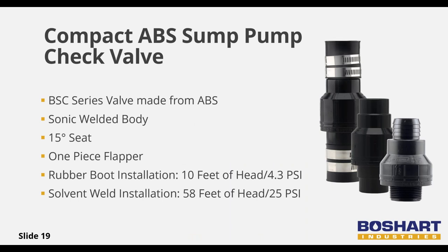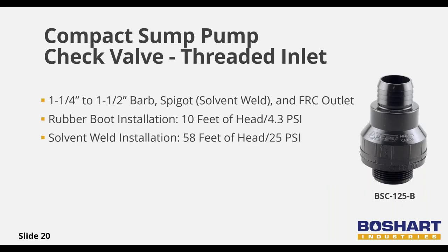All compact ABS sump check valves use a gravity-style design. They are constructed from two body pieces that are ultrasonically welded together, and the flappers are made of one piece to ensure a positive seal on the seat. These should all be installed in a vertical position so flapper operation is not compromised. Compact valves with threaded inlets may come with three outlet options: barbed for sump discharge kits, slip solvent weld, or an attached flexible coupler. If the flexible coupling is used, the line will need to be thrust blocked, and the pressure rating changes from 25 psi to 4.3 psi.